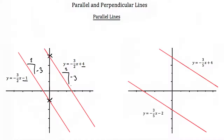Let's check our other set of lines and see if that holds. Here we have y is equal to negative 3 fifths x plus 4. Our y-intercept is 4, which is right there. And then we're going over 5 and down 3, so our rise over run gives us a slope of negative 3 fifths.